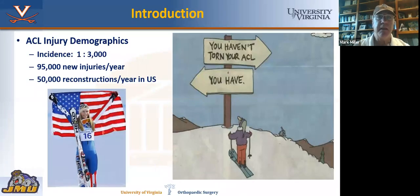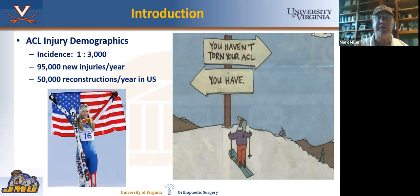ACL injuries are pretty common, about one per 3,000. There are 95,000 new injuries a year and 50,000 reconstructions every year in the United States. And really it boils down to, especially in skiers, those who have torn their ACLs and those who haven't.